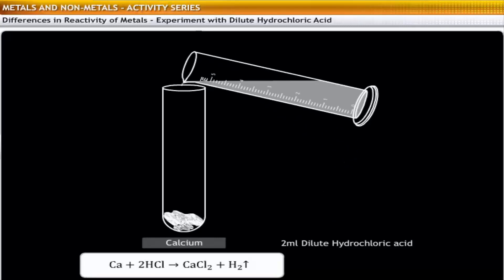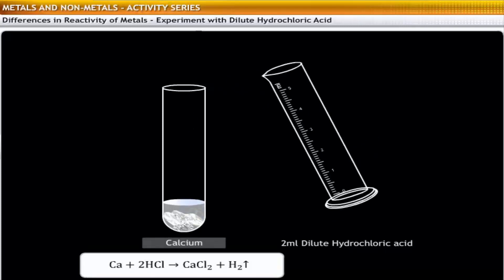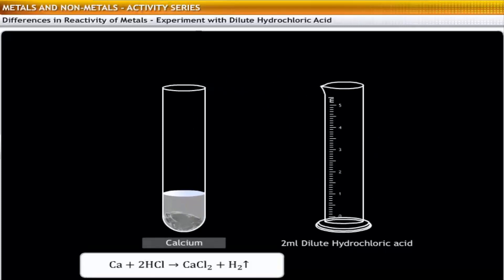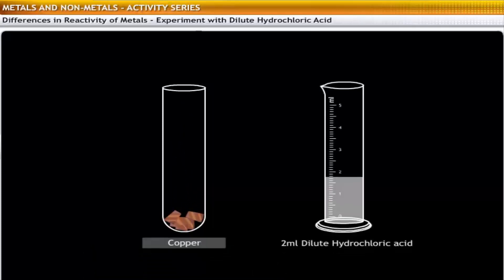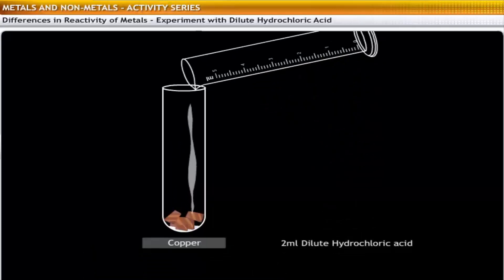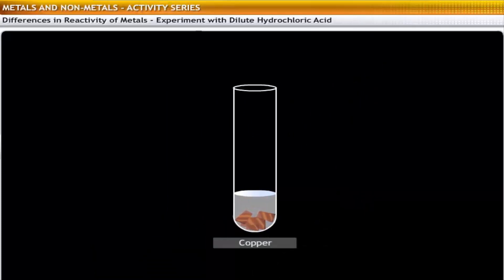The rate of liberation of hydrogen reduces further in the reaction with calcium, while copper does not react with hydrochloric acid at all. The variation in the rate of liberation of hydrogen indicates that the metals differ in their reactivity.